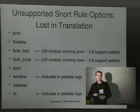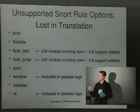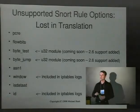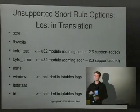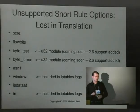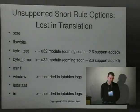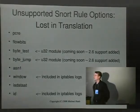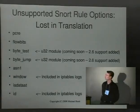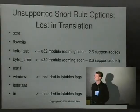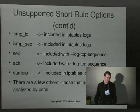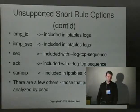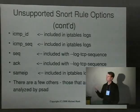There are pathological cases where you can construct a PCRE and data against that PCRE such that the runtime blows up into thousands of years — we don't want to make it easy for someone to crash the kernel by wafting a maliciously constructed piece of information past the interface. The byte test and byte jump options will be supported within FWSnort to some degree because the U32 module was recently added to the 2.6 kernel development series — I think it's in 2.6.24 now. There are a few additional options we can't filter on directly within an IP tables rule, but in many cases they're included within an IP tables logging message.